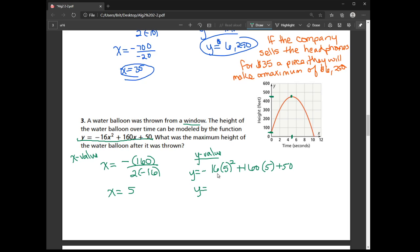All right, so this y value is going to be telling me my height. So this first term, 5 squared is 25, times negative 16 is negative 400. This next part, 160 times 5, is 800.